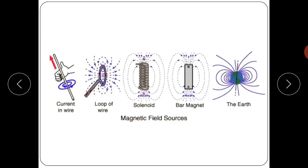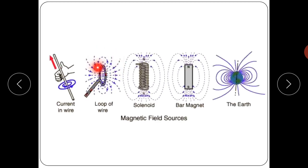For current in a straight wire, the right-hand rule applies: current flows and generates magnetic flux. For current in a wire loop, the magnetic field lines form a loop in either the clockwise or anti-clockwise direction.